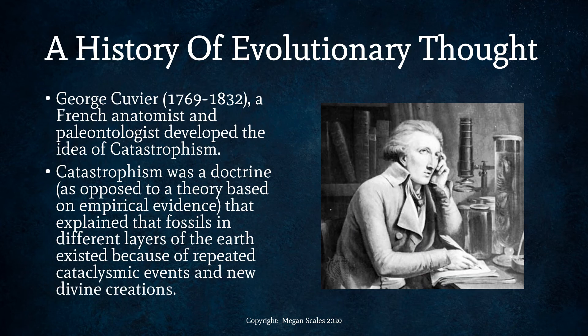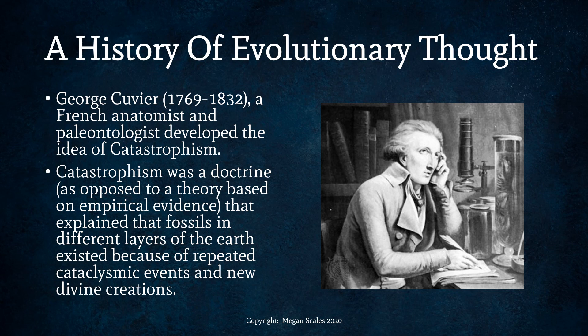Georges Cuvier was a French anatomist and paleontologist who developed the idea of catastrophism. He figured that the best explanation for the different extinct life forms we had never seen before on Earth were due to different periods of creation and disaster from God — that God must have had multiple creations and wiped them out. Catastrophism was a doctrine explaining that fossils in different layers of the earth existed because of repeated cataclysmic events and new divine creations. Of course, that's not accurate scientifically, but he was trying to figure it out and came up with that idea.